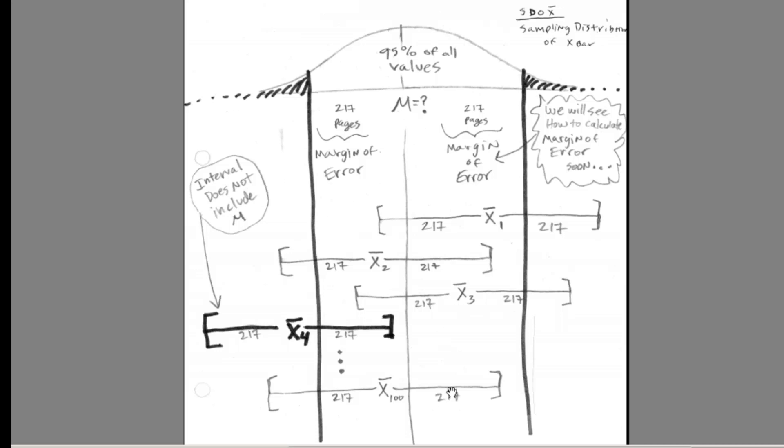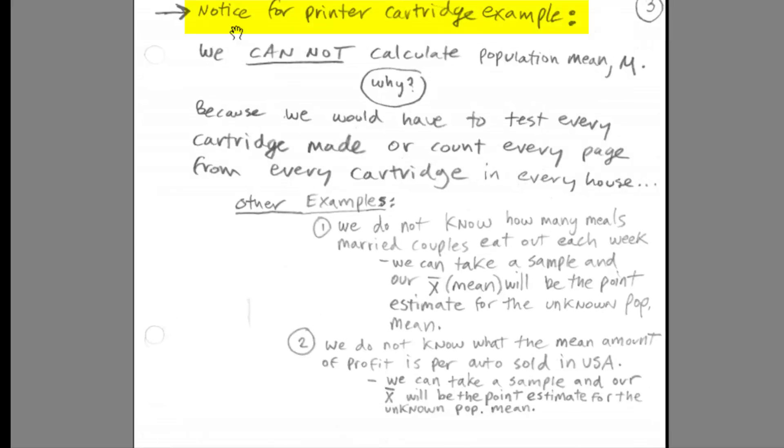So if you were to create 100 similar intervals, 95 would contain the population mu, and 5 would not. This assumes, this analysis here assumes, that the original population distribution is normal or bell-shaped, or near normal or bell-shaped. If it's not, then as long as you have a big enough N from the central limit theorem, then about 95 intervals would have the population mean, and 5 would not.